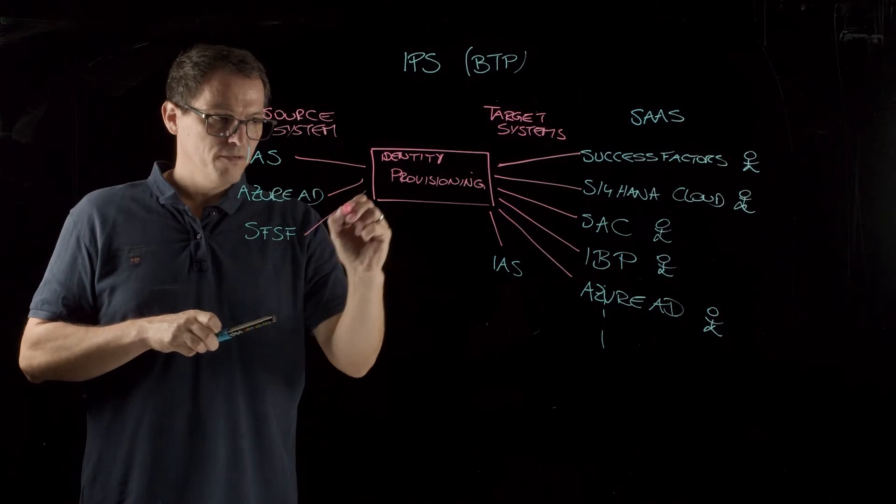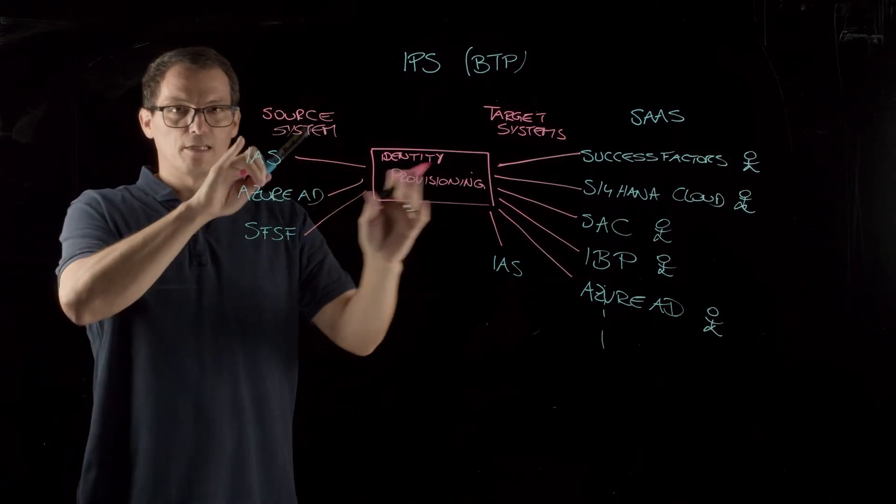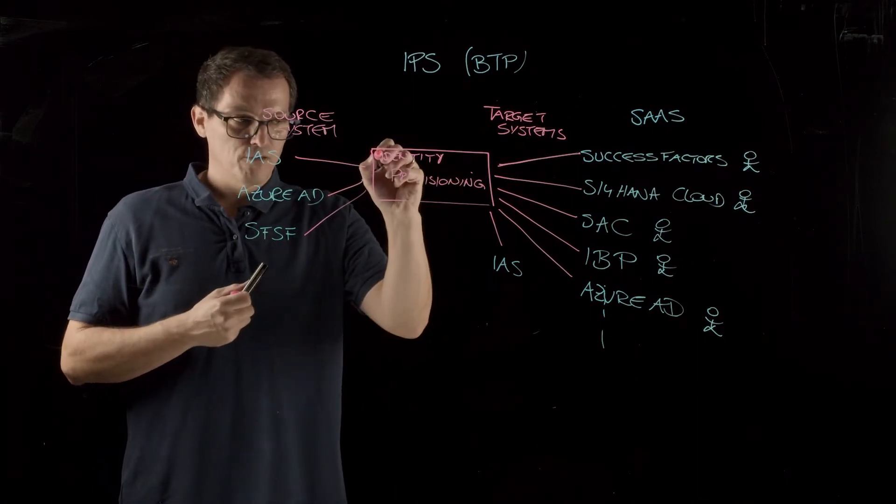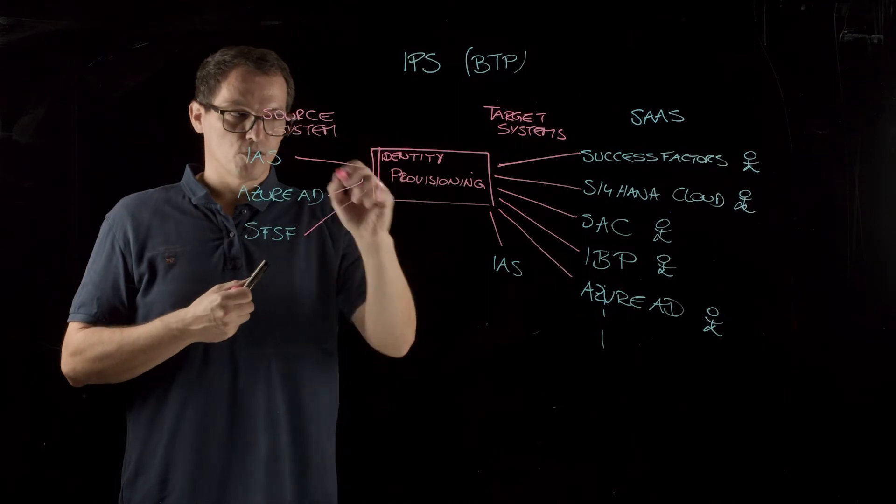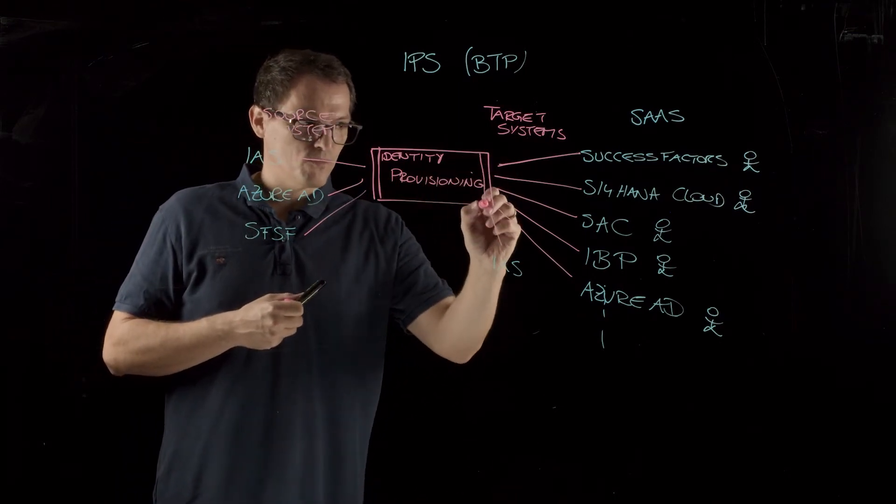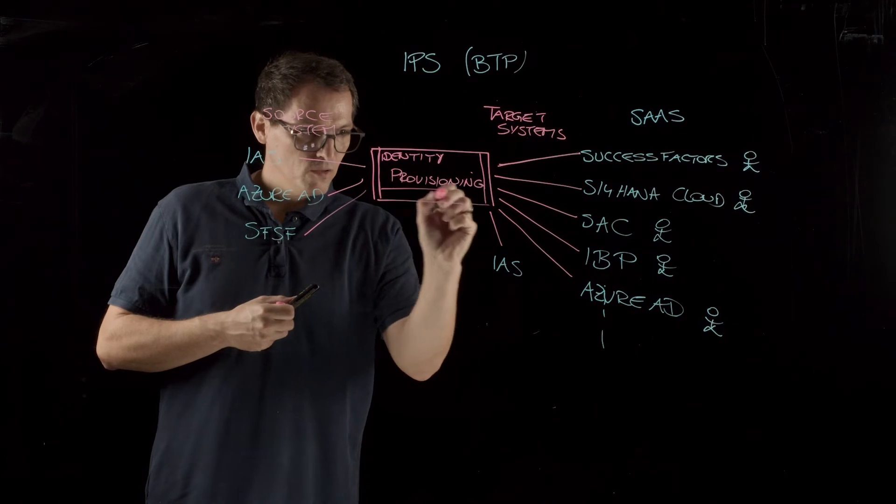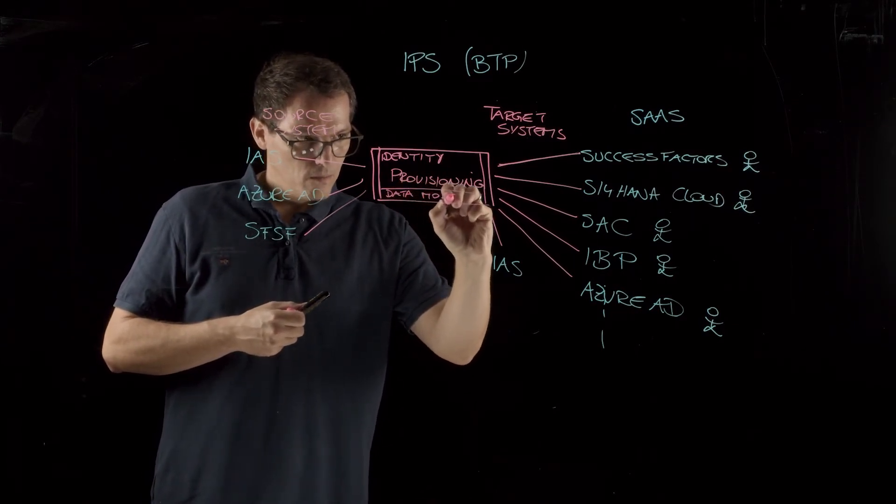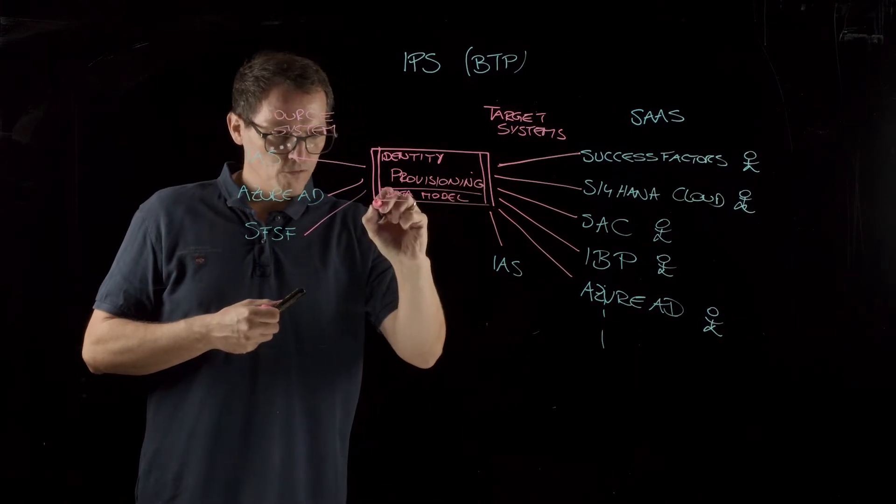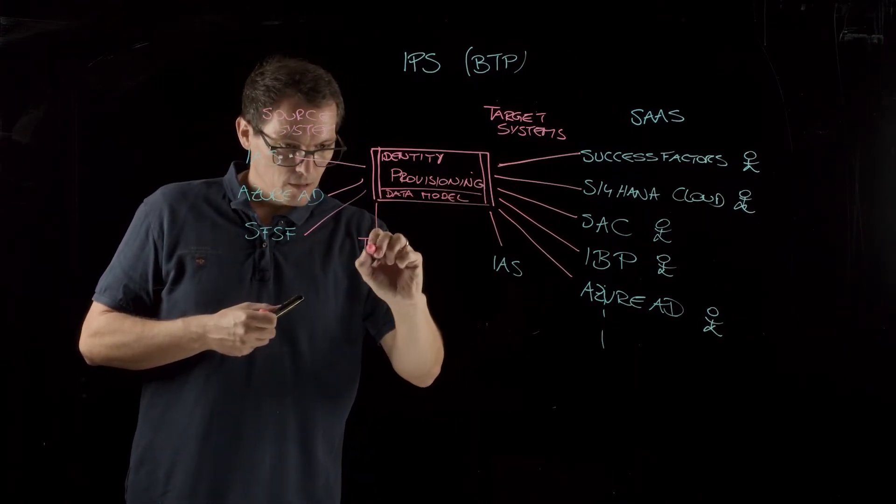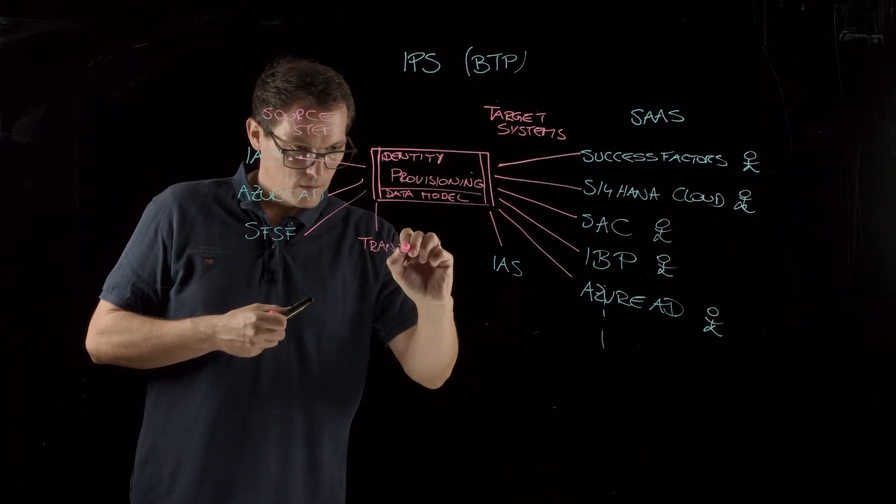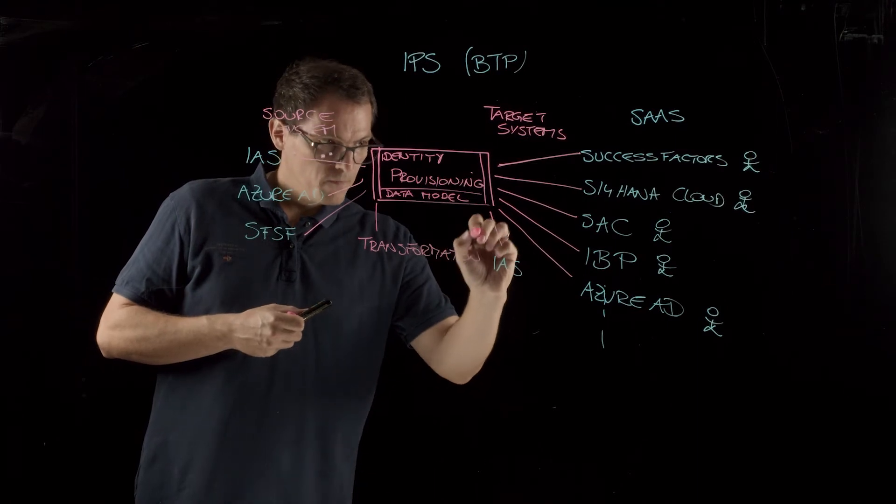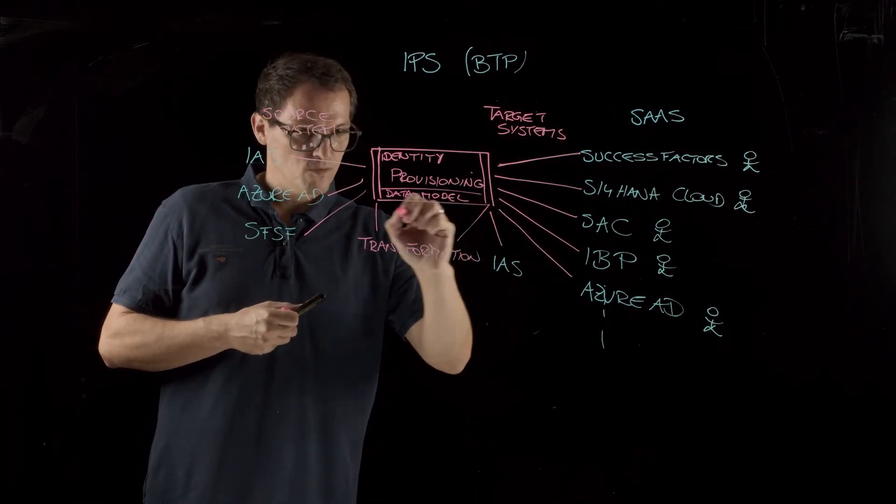And basically, what we have here is we usually don't have the same data structures, the same data format in different systems. Therefore, we have a transformation on the source system side and on the target system side. So inside the identity provisioning, we have an own data model being used here. And we have transformations here.